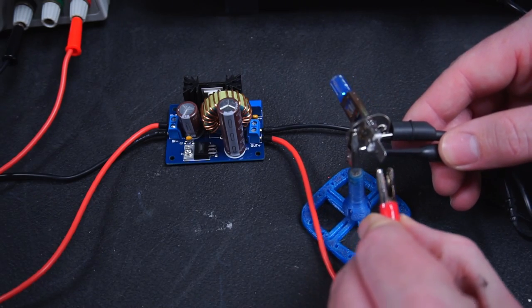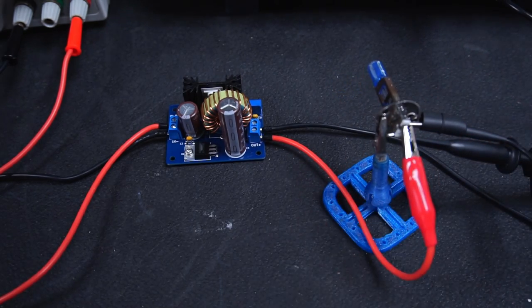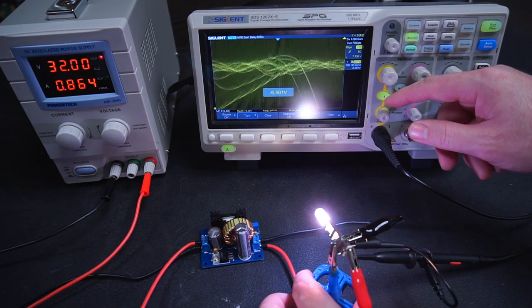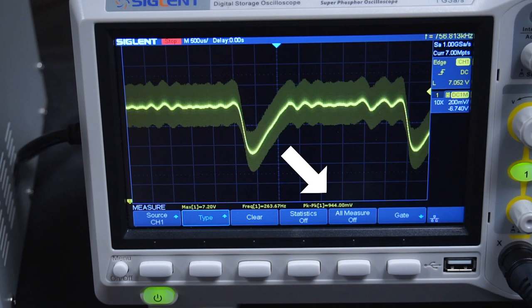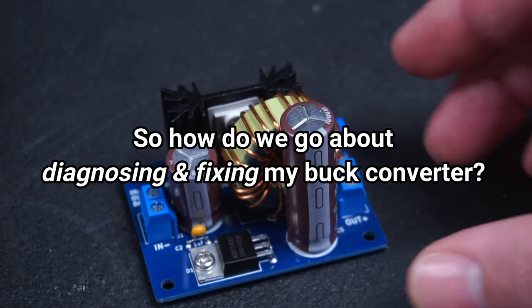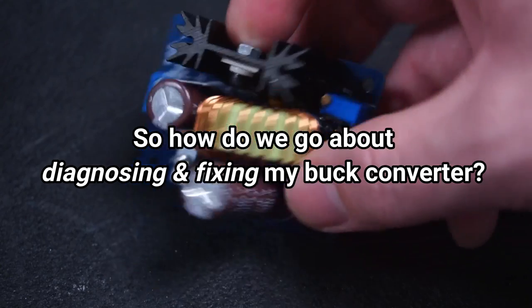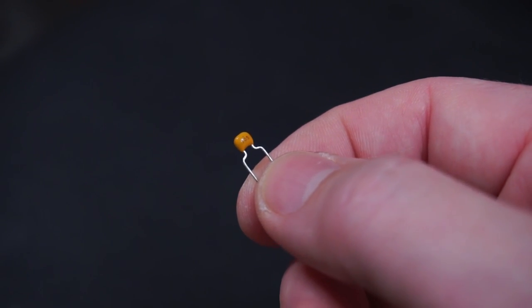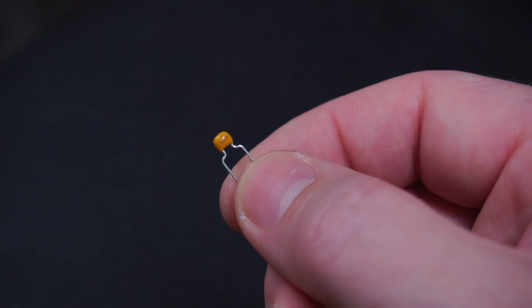And if we add a load to the buck converter, in this case a bulb, if you thought 128mV wasn't good how about close to 1000mV of noise. And to add insult to poverty the DC voltage isn't stable rendering this buck converter completely unusable. So how do we go about diagnosing and fixing my buck converter?